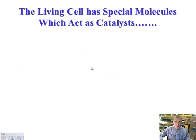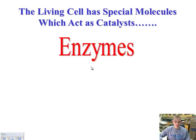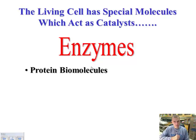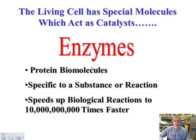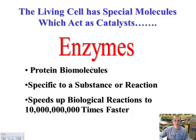The living cell has special molecules in our body which act as catalysts, and what these special molecules are called are enzymes. Enzymes are protein biomolecules — they're classified as a protein, which is why I put it in this section. They're made up of amino acids, they're specific to a substance or a reaction, and they speed up the reactions in our body. You can see it by looking at this — 10 billion times faster. In order for your body to do something like move your arm, to get all these chemical reactions occurring fast enough in a split second, we need these enzymes. Otherwise, digesting food and all this stuff would just take way too long without enzymes in our body.